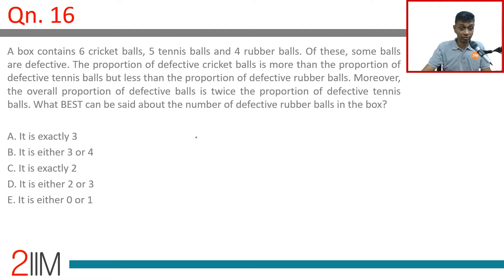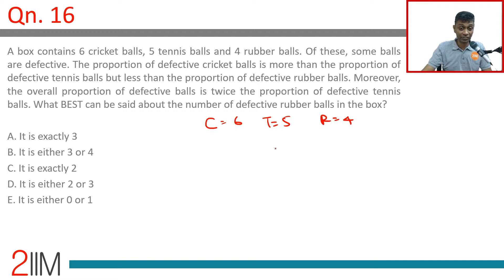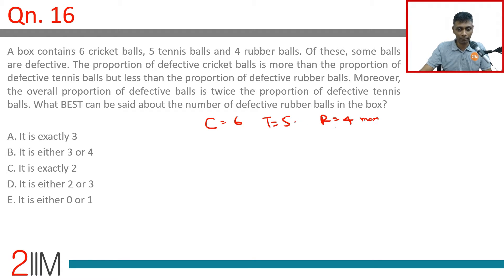A box contains six cricket balls, five tennis balls, and four rubber balls. Of these, some balls are defective. The proportion of defective cricket balls is more than the proportion of defective tennis balls but less than the proportion of defective rubber balls. So rubber balls' proportion is maximum, tennis balls' proportion is minimum, and cricket is in between.